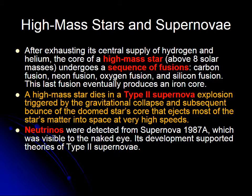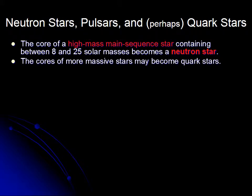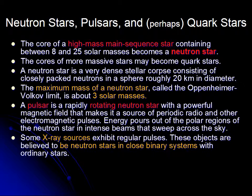Among the products of that explosion are neutrinos, and this flood of neutrinos was detected from supernova 1987A by neutrino observatories in Michigan and Japan — 20 neutrinos were detected. The core of a high mass star, if the mass is between 8 and 25 solar masses, will become a neutron star. The core of more massive stars will become quark stars or black holes.